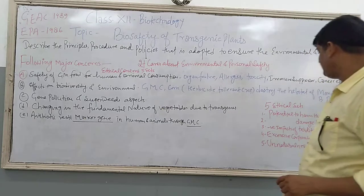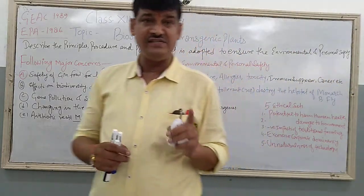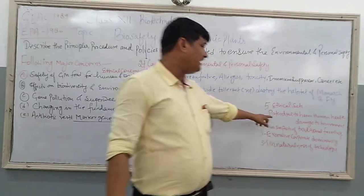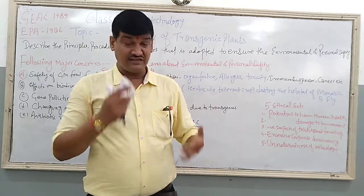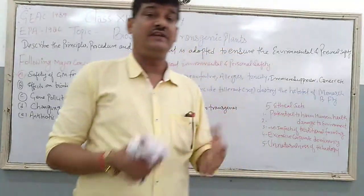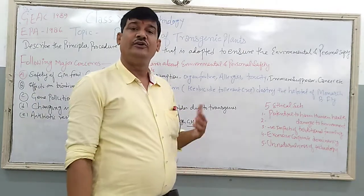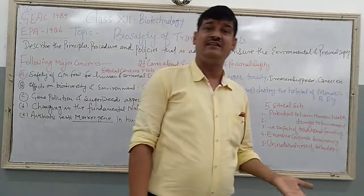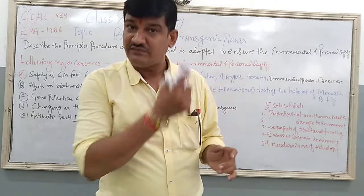Number 1 is the potential to harm human health. This is the first issue against GMOs or transgenic crops. Whatever the transgenic crops or transgenic plants are consumed or taken by humans, they definitely have some adverse effects — like the pros and cons, that is the benefits as well as the side effects.